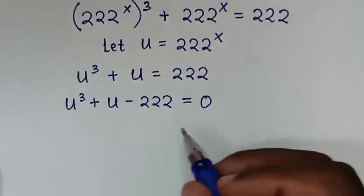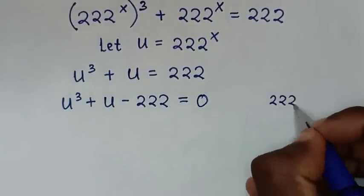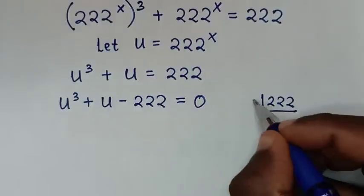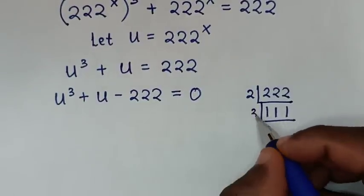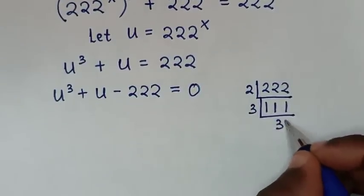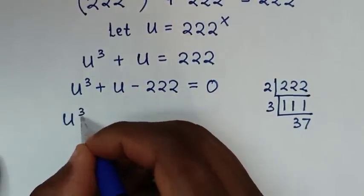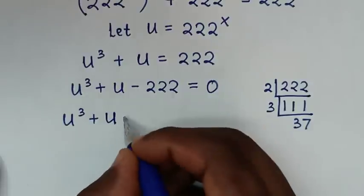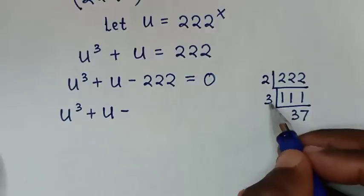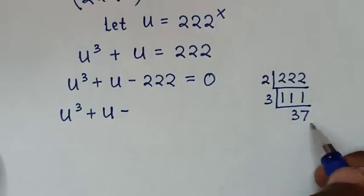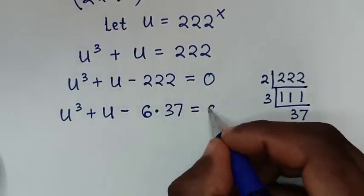Then we'll find the factors of 222. Since 222 is divisible by 2, we get 111, then divisible by 3 gives 37. So 222 equals 2 times 3 times 37, which is 6 times 37. So u³ + u - 222 equals 6 times 37, set equal to 0.